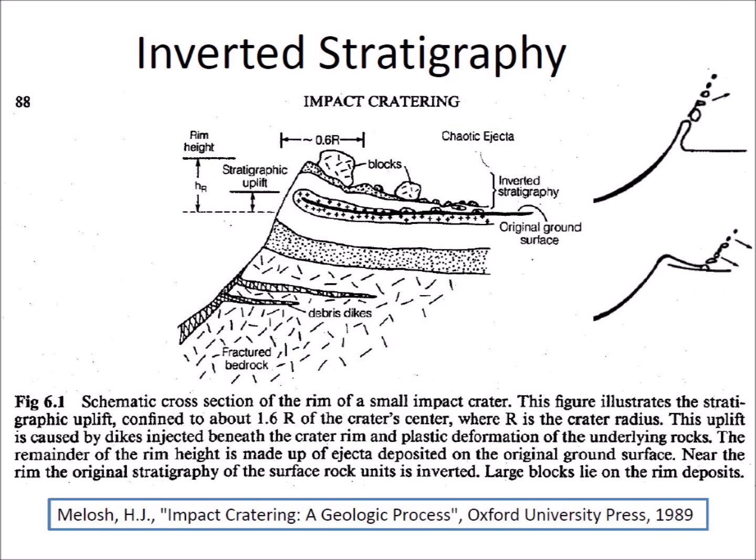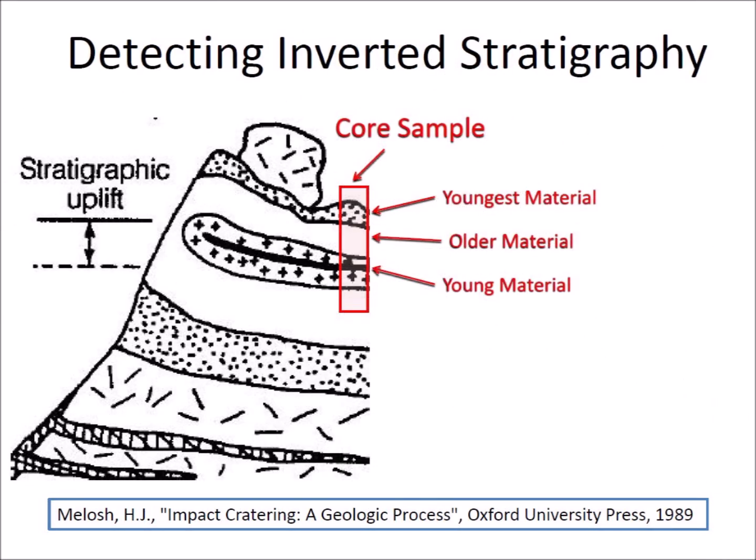Inverted stratigraphy is created in the rim of an impact crater when the flanges produced by the penetration of the projectile fold over the existing landscape. It can be detected by examining at least three sections of a core sample in the rim. Proceeding from the top down: the surface layer contains the youngest material; immediately below is older material excavated and flipped during rim formation; below that is young material that was the original surface before the impact.